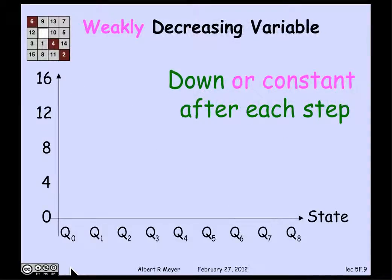A related idea is a weakly decreasing variable. These are not necessarily useful for proving termination, but they are often useful, as you'll see as we progress through the term, examples where it helps you analyze the behavior of the algorithm. So a weakly decreasing variable is one which goes down or stays constant. It never gets larger.